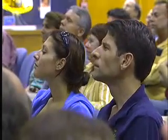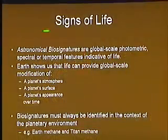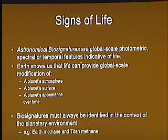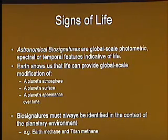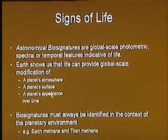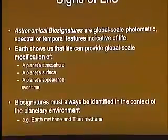So our best chance is to look for global changes in the atmosphere and surface of the planet thanks to life. Life actually leaves its footprint on this planet in a big way. What we're looking for are astronomical biosignatures — not in situ 'I have the rock in my hand' biosignatures, but biosignatures seen by an orbiting spacecraft or a telescope looking at a distant planet. These biosignatures are global-scale photometric, spectral, or temporal features — breaking light up into constituent colors, or time-varying features indicative of life. Looking at Earth, there are three major types: things in the atmosphere, things on the surface, and ways the planet's appearance changes over time.